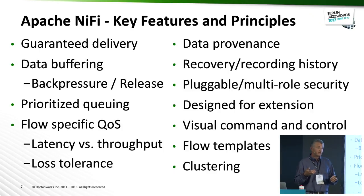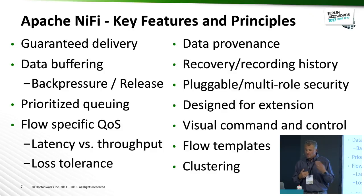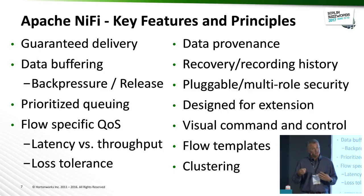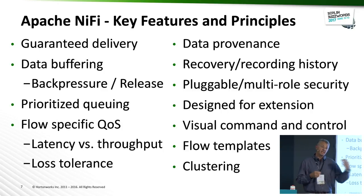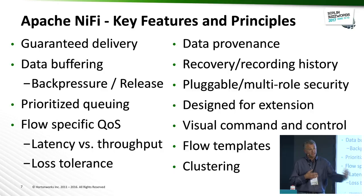There's data buffering — a consumer isn't always able to ingest data at the same rate, so you need to buffer that and apply back pressure in the flow and relieve it as needed. There's also prioritized queuing: not all data is created the same. Some data coming off a system might be an alarm you need to act on faster, while other data could be slower. You can prioritize which data is more important as it moves through the flow.